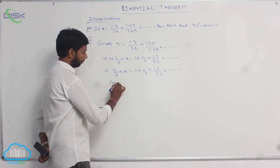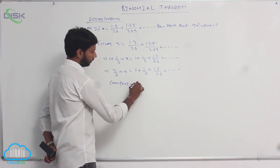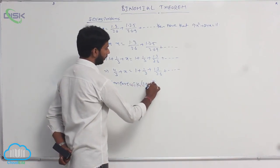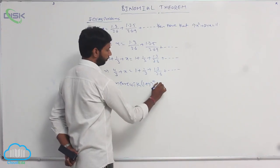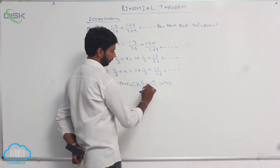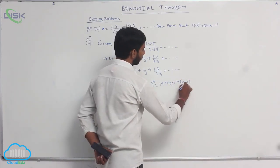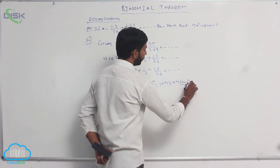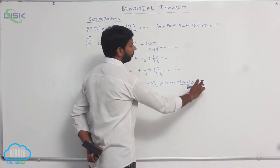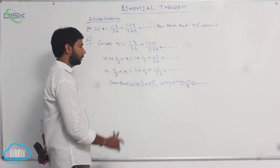Compare with the binomial expansion: (1 + y)^n = 1 + ny + n(n−1)/2 · y² + and so on.